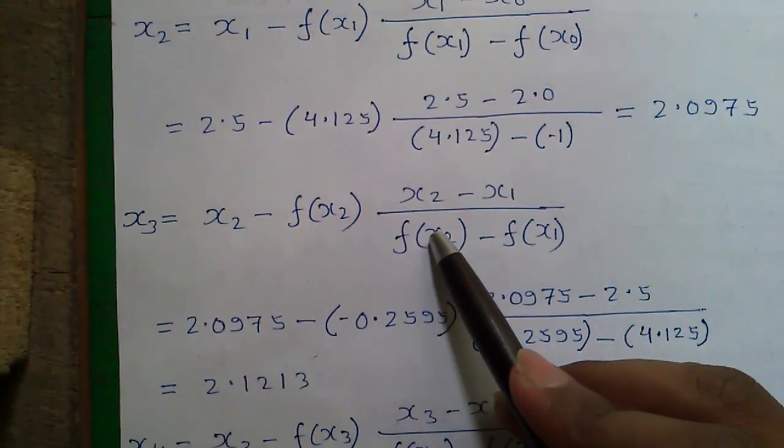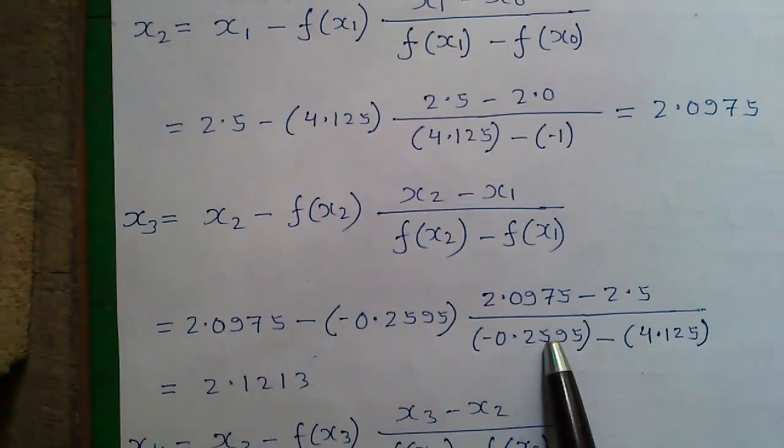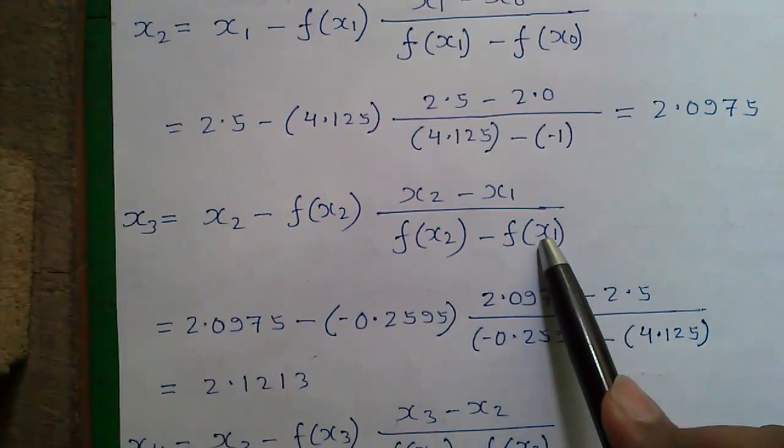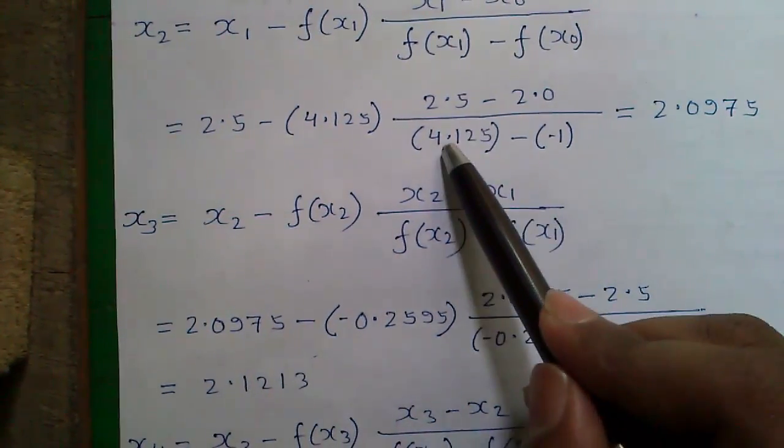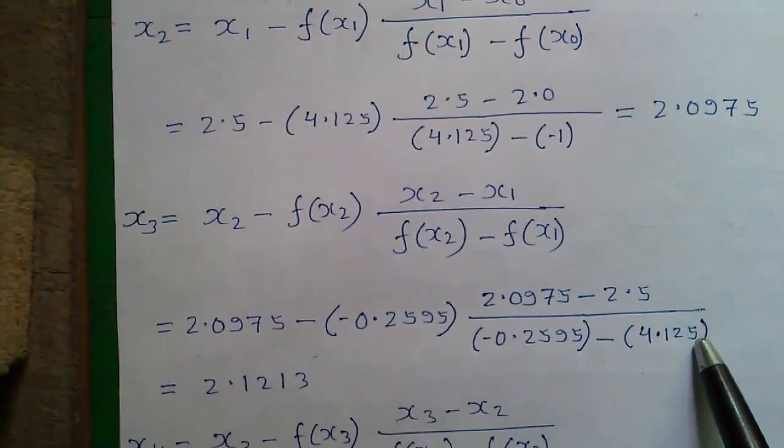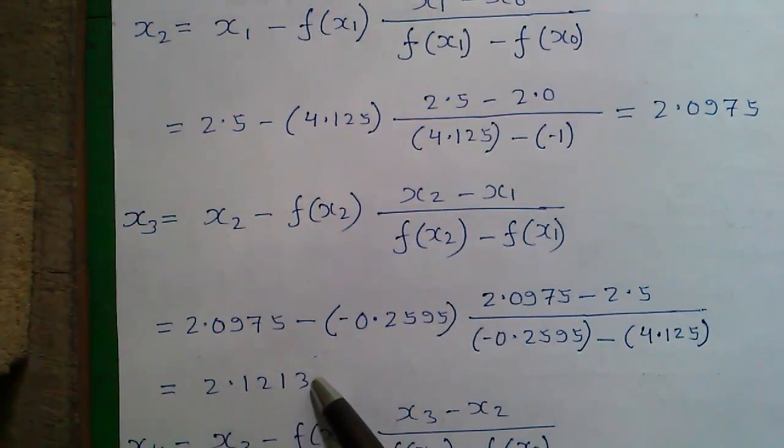x₂ is 2.0975 - x₁ that is 2.5 divided by f(x₂) this value minus f(x₁) and f(x₁) is 4.125. So that will give us 2.1213.